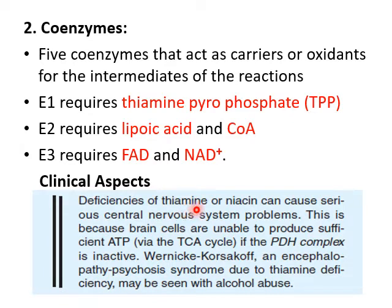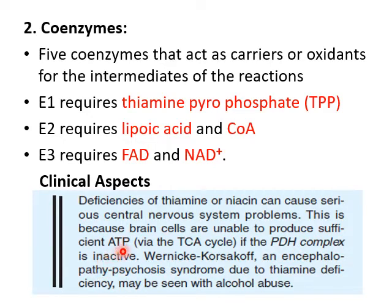If thiamine (vitamin B1) or niacin (vitamin B3) are deficient, it may result in delayed activity of the TCA cycle, since the first reaction of the Krebs cycle would be blocked. The TCA cycle would become impaired if the PDH complex is inactive, and ATP will not be generated if any one of these vitamins is missing.